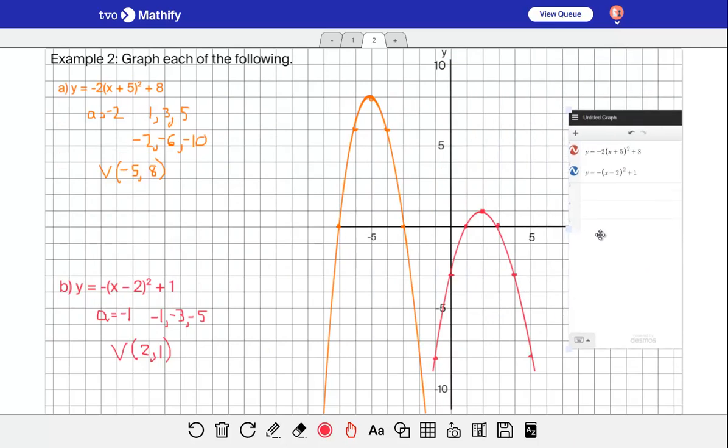That's how you graph using the step method. In each case, you're multiplying the 1, 3, 5, 7, 9 numbers by the a value. That gives you the steps on either side to plot some points so you can draw the parabola fairly accurately and fairly quickly. That's the end of the tutorial.